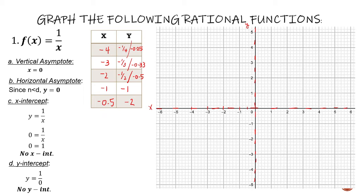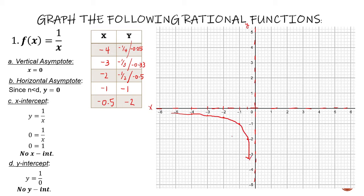So if we are going to plot the points: negative 4 and negative 0.25 — both are negative, so it's in the third quadrant. Next, negative 3 and negative 1/3, which is negative 0.33. Negative 2 and negative 0.5, so near the center. And then negative 1 and negative 1. And negative 0.5 and negative 2 — we plot that here. After plotting the points, we sketch the graph, and the graph should look like that.